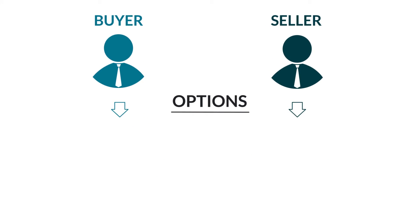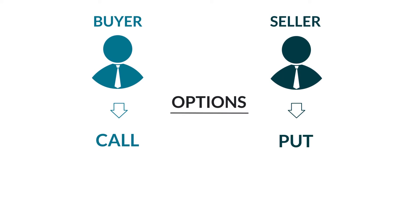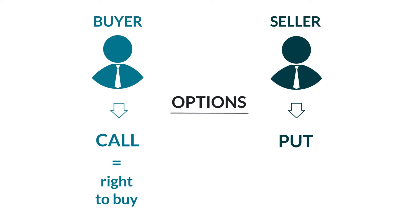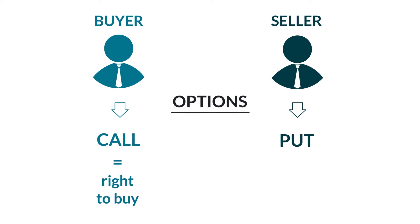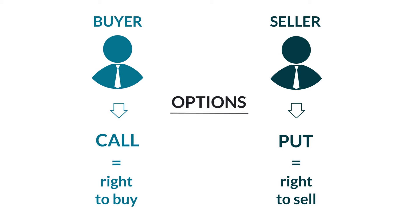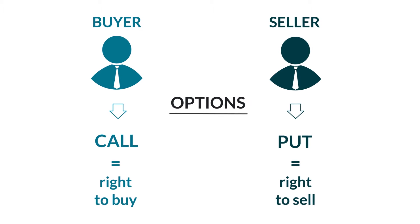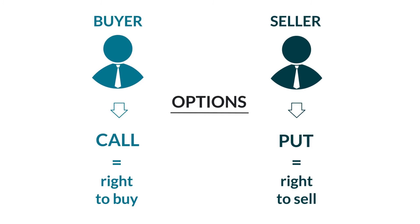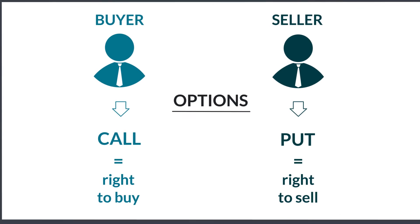There are two types of vanilla options: calls and puts. A call option gives the holder the right, but not obligation, to buy an underlying product at a specific price by a certain expiry date. A put option works the other way around — the holder has the right, but not obligation, to sell an underlying product at a set price before a certain expiry date.